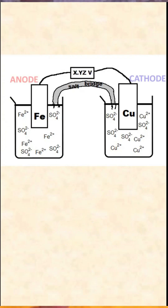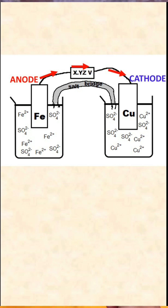In a galvanic cell, there are two electrodes: the anode and the cathode. Electrons always run through the wire from the anode to the cathode. At the anode, oxidation is taking place, which means that a reactant loses electrons.